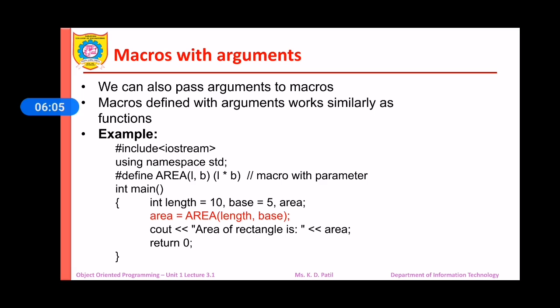Now, the AREA macro, AREA with capital letters will be called and which has a piece of code as L multiplied by B. So, we will get the area as length multiplied by base that is 10 multiplied by 5. So, final output, the result we will get as 50.